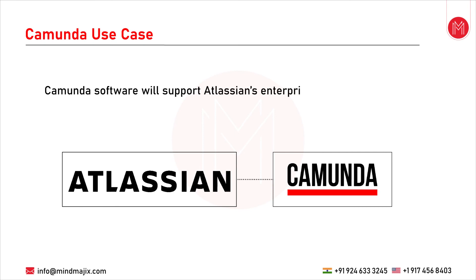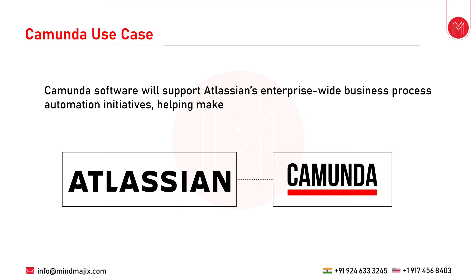Camunda software will support Atlassian's enterprise-wide business process automation initiatives, helping make operations more efficient. Atlassian is a global software company with more than 4,000 employees. With Camunda BPM, Atlassian's development teams gain access to a complete business process automation tech stack with powerful execution engines for BPMN workflows and DMN decisions, paired with essential applications for modeling, operations and analytics. One of the initial projects will utilize Camunda's capabilities to integrate with a new SaaS-based accounting platform, centralizing finance workflows and revenue recognition processes.